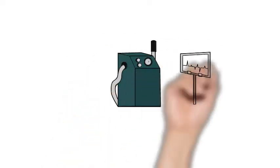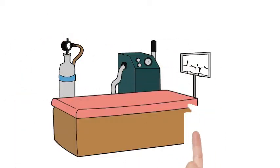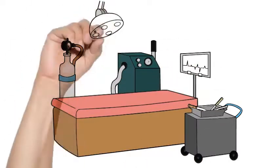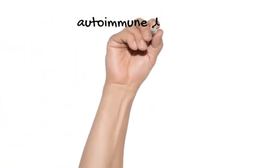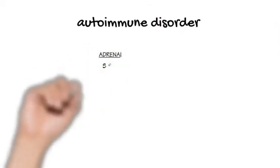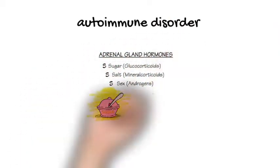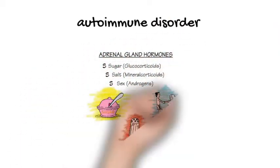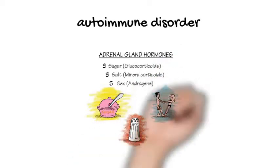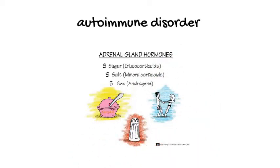Welcome to Dr. Vick's Academy. Today we will be talking about Addison disease. Autoimmune adrenalitis is a disorder in which the adrenal cortex is destroyed, resulting in the loss of mineralocorticoid, glucocorticoid, and adrenal androgen hormone production.